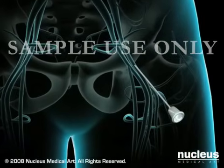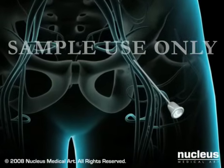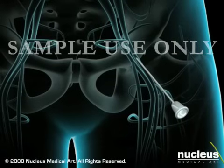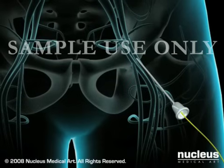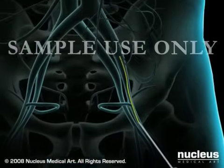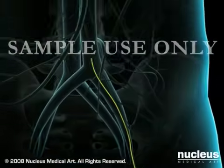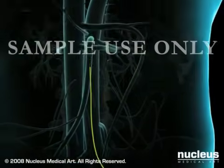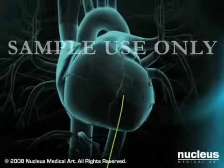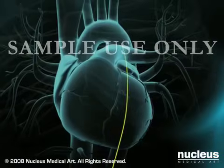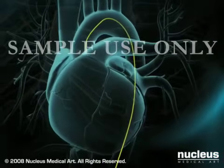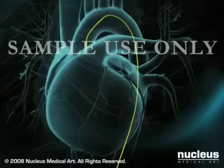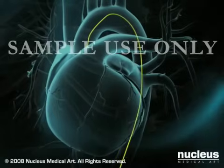The doctor numbs the skin in your groin area and inserts a needle into your femoral artery. Once the needle is placed, a wire is passed through the needle and gently guided through the arterial system to the heart. The needle will be withdrawn and exchanged for a small, flexible tube called a sheath that permits access to your femoral artery.